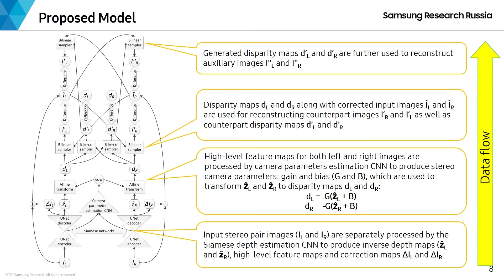Second, high-level feature maps for both left and right images are processed by a camera parameters estimation CNN to produce stereo camera parameters, gain and bias, which are used to transform inverse depth maps to primary disparity maps using an affine transform. Then, the primary disparity maps along with the corrected input images are used for reconstructing counterpart images as well as counterpart secondary disparity maps using bilinear sampling.